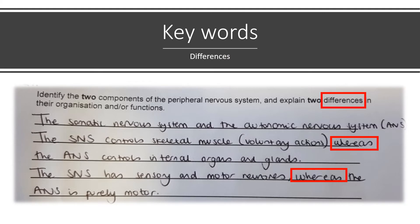There are a few key words in AQA psychology which seem to trip pupils up. The first one is the word 'differences.' There are two parts to this AO1 question: identify the two components of the peripheral nervous system, and then explain two differences in their functions. If it says differences, you've got to make those differences really explicit to the moderator. You can't just outline them both — you can't just say the SNS controls skeletal muscle and the ANS controls internal organs, because that's not meeting the requirements of the question. You've got to use key words like 'whereas,' 'however,' or 'in contrast.' In this student's answer, I've highlighted where they've used 'whereas' to show a clear difference between the two functions.